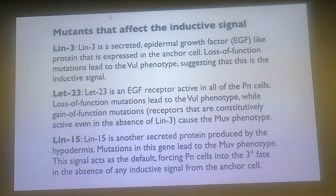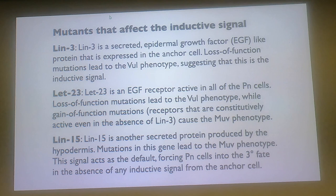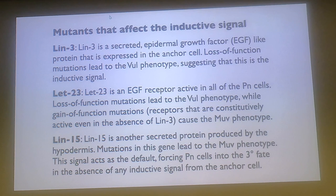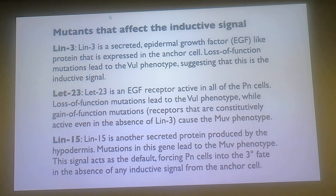We've worked out a whole bunch of these mutations. For instance, there's a mutation called LIN-3. Nematode mutations have the most boring names - they're all named after effects in the lineage. LIN-3 is a gene that produces a secreted epidermal growth factor-like molecule. It's produced by the anchor cell. And if you knock this mutation out - if you ablate that gene or that cell - you don't get the signal to make the vulva, so it leads to the vulvaless phenotype. So there's got to be a signal, and the candidate for the signal is LIN-3.